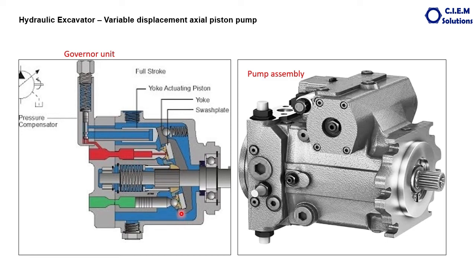The swash plate movement is governed by the unit called the hydraulic governor or servo piston. In the present generation of hydraulic pumps, this complete job is done through electronic sensors and solenoids, which is more precise than the mechanical governing unit.